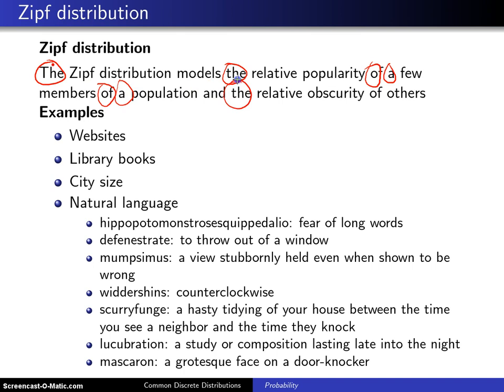The notion here is that in a particular sentence, you'll notice that there are a few words such as 'the', 'of', and 'a' which occur a lot. Then there are other words such as 'obscurity', 'members', 'popularity', and 'Zipf' that don't occur very often. That's just the way the English language works — a few words show up all the time, and then a huge number of other words don't show up very often.